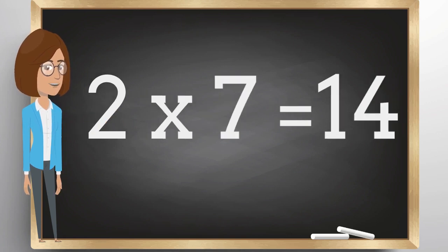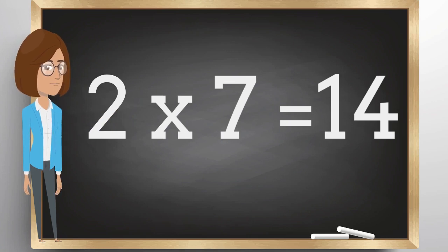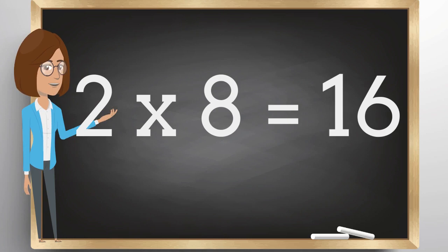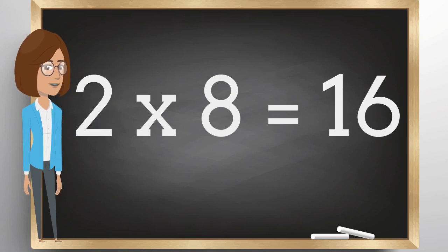Two times seven is fourteen. Two times eight is sixteen.